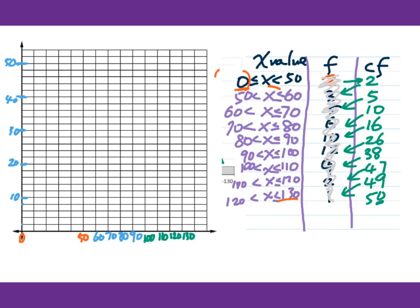Now they get started from 0, so we do 0, 0, that's the first point. Then 50, I look for this 2. 2 is here. Each unit stands for 2. So for 60, I do 5. 60 is 5, it's here. 70, that will be 10. This point.